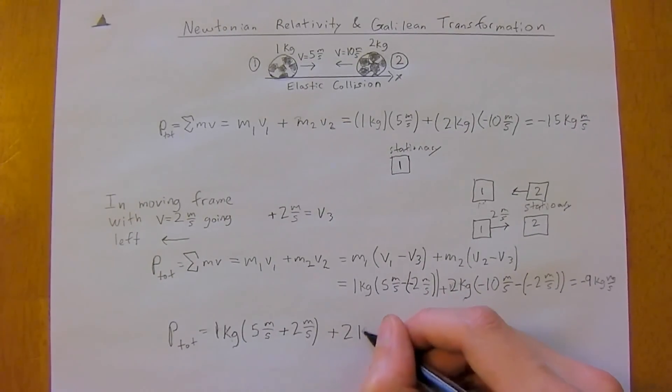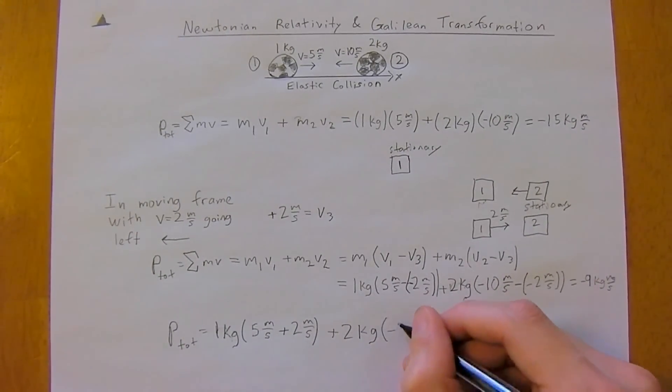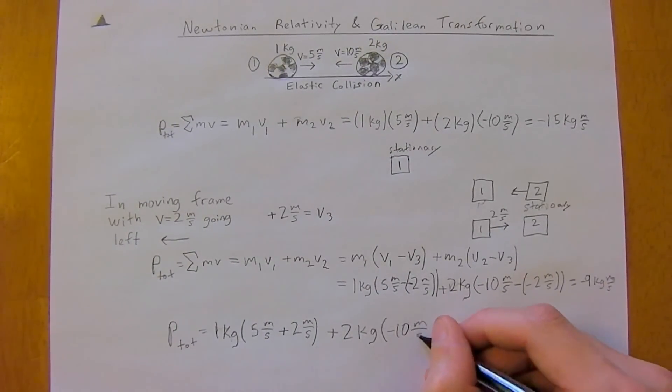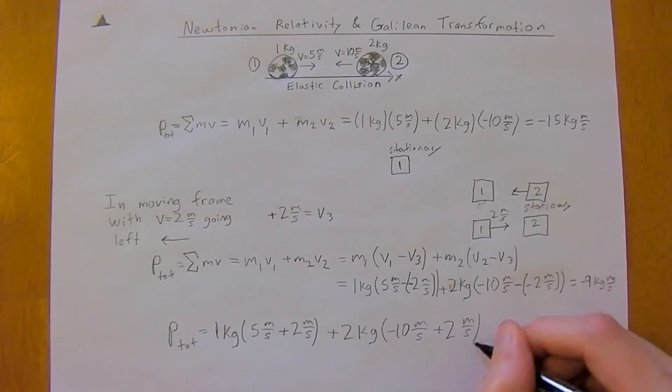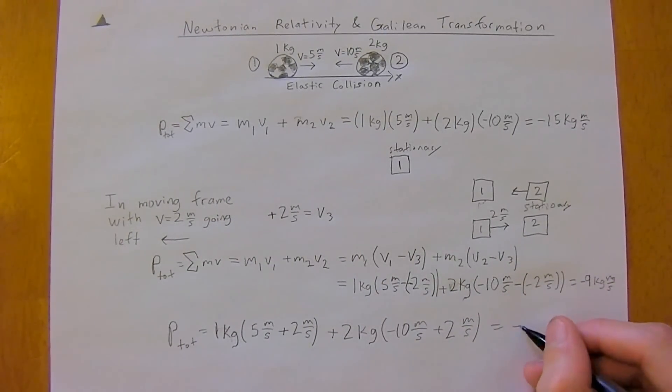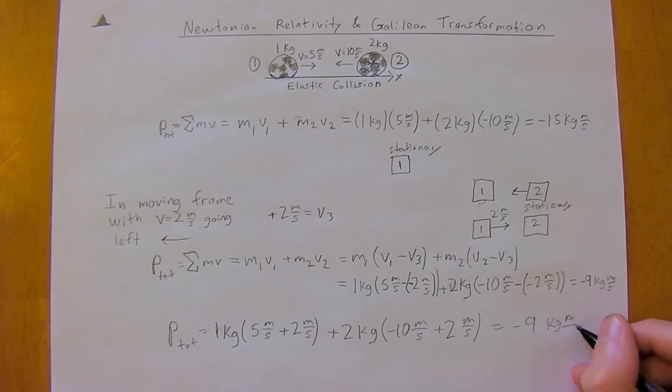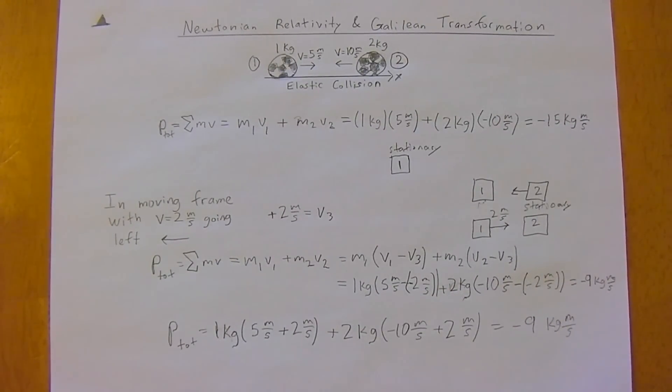Then plus 2 kilograms times negative 10 meters per second, plus 2 meters per second. And of course, this comes out to the exact same thing, 9 kilogram meters per second. Okay, thank you. Have an excellent day.